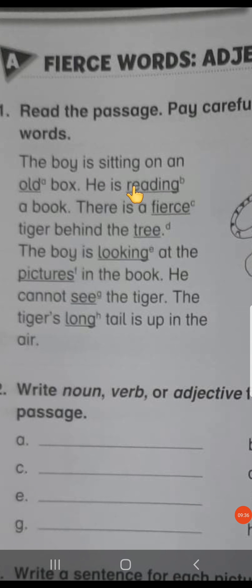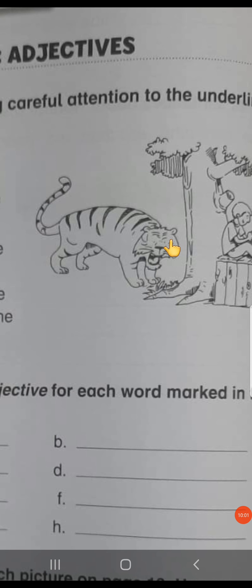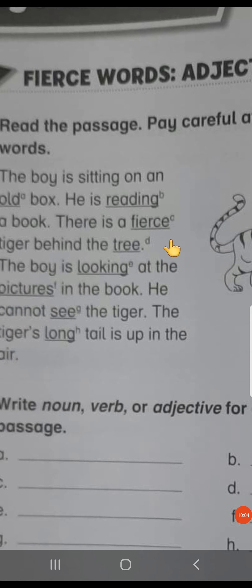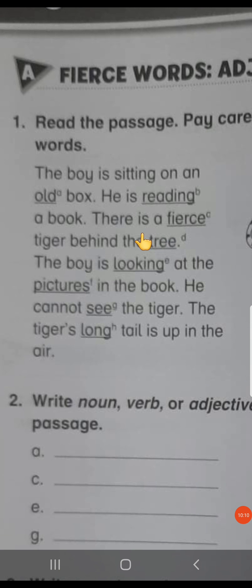He is reading a book. So, they have underlined reading and as you can see it is written small b. So, reading it is an action. Action words are known as verb. So, reading is a verb. There is a fierce tiger behind the tree. Fierce is also underlined and there is a small c with fierce. So, fierce is giving you the information about this tiger. It is describing tiger. So, describing words are adjectives.